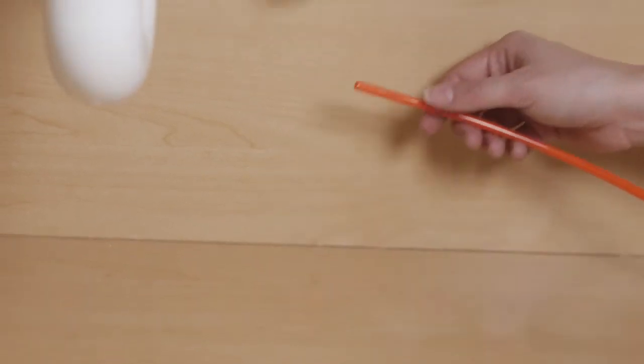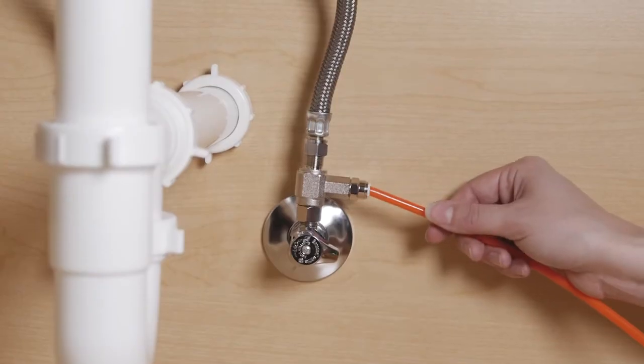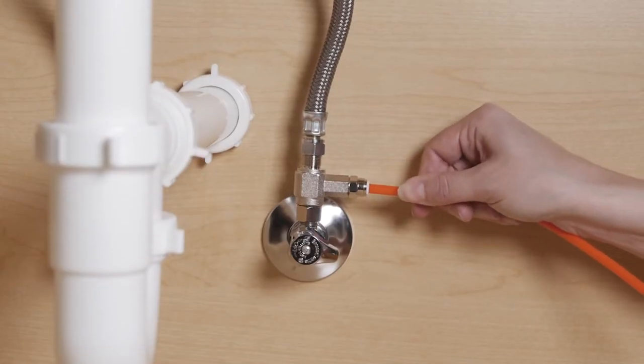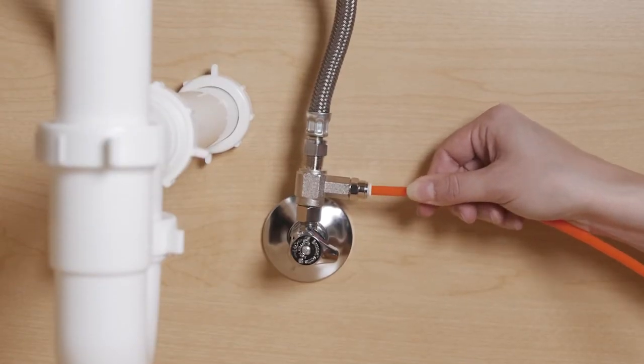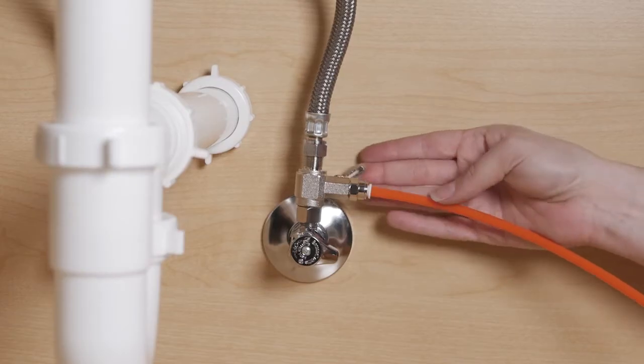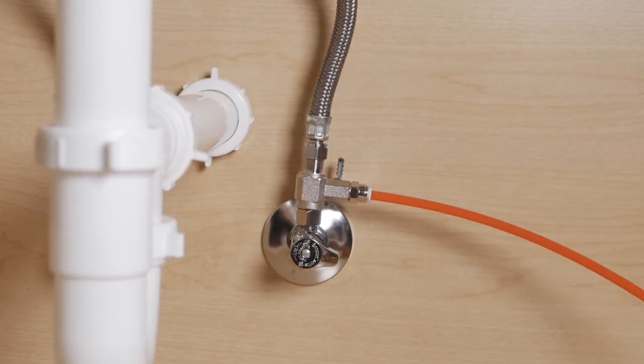Locate the provided orange tubing and insert one end of the orange tubing into the T-valve quick connection. Push the tube firmly into place and ensure the T-valve is in the closed position with valve switch pointing up.